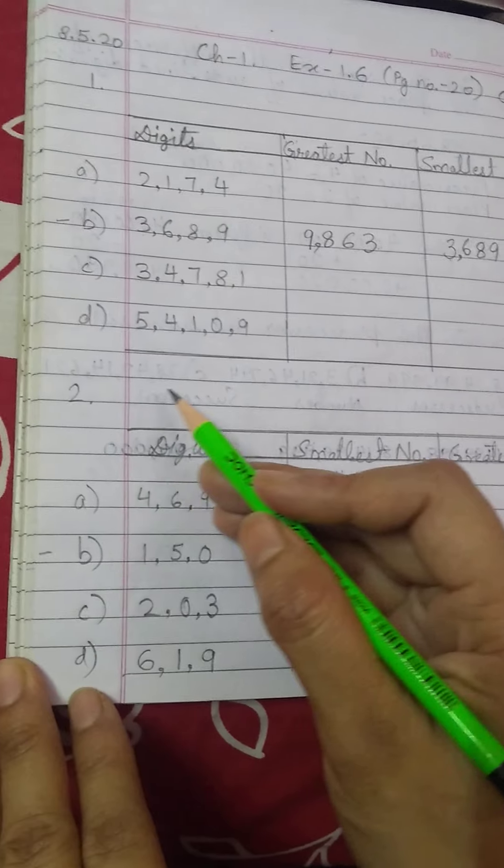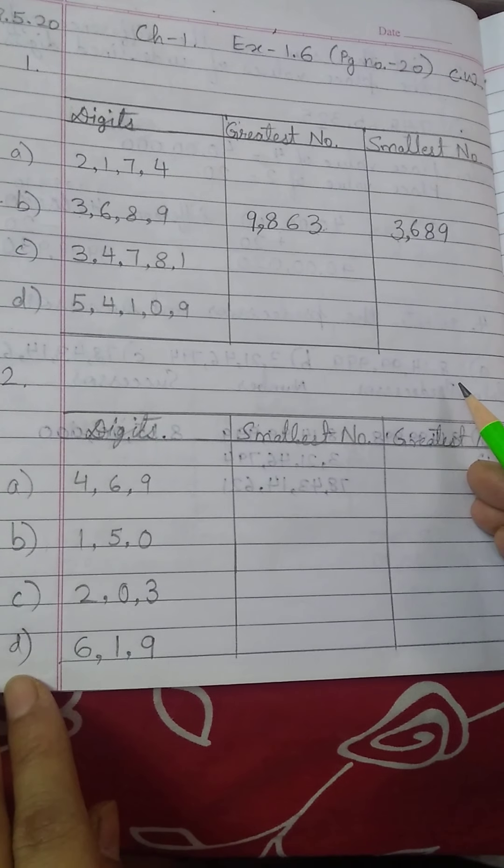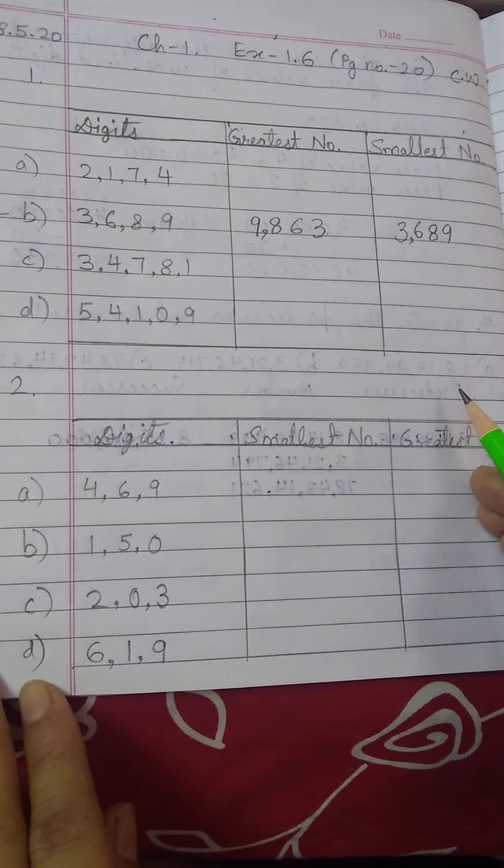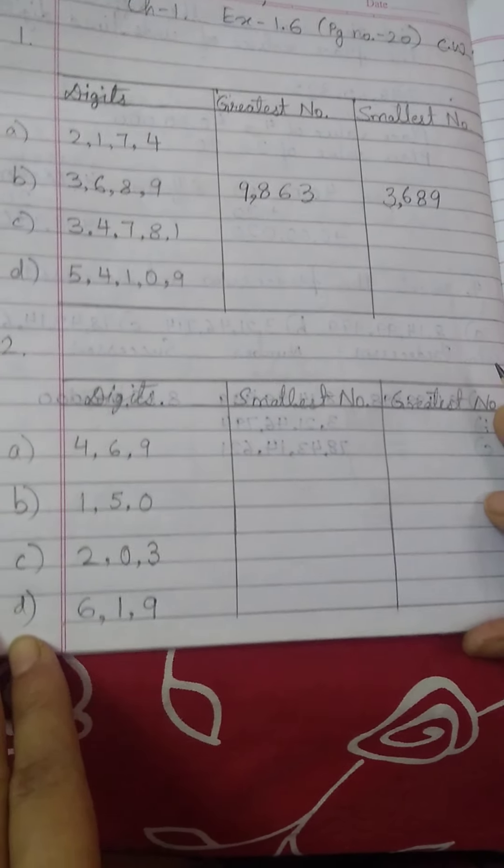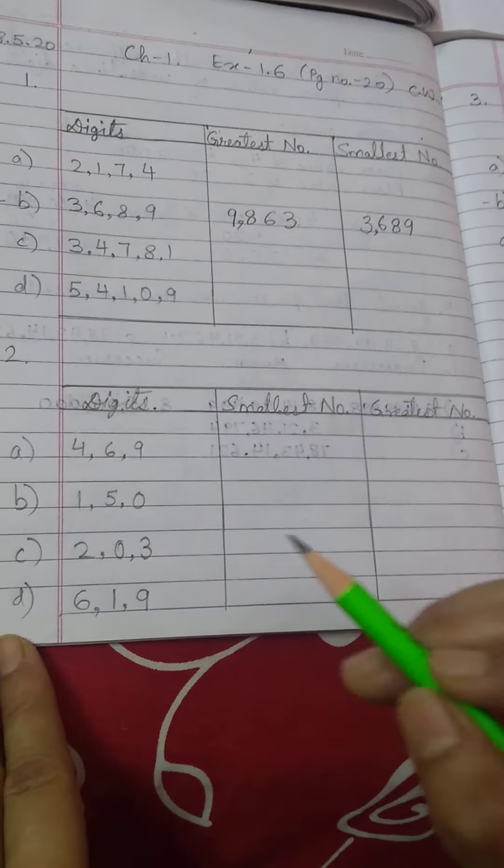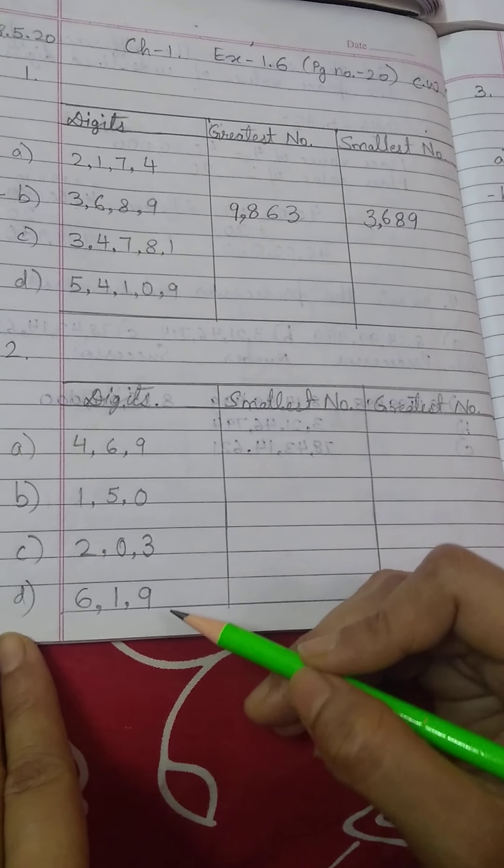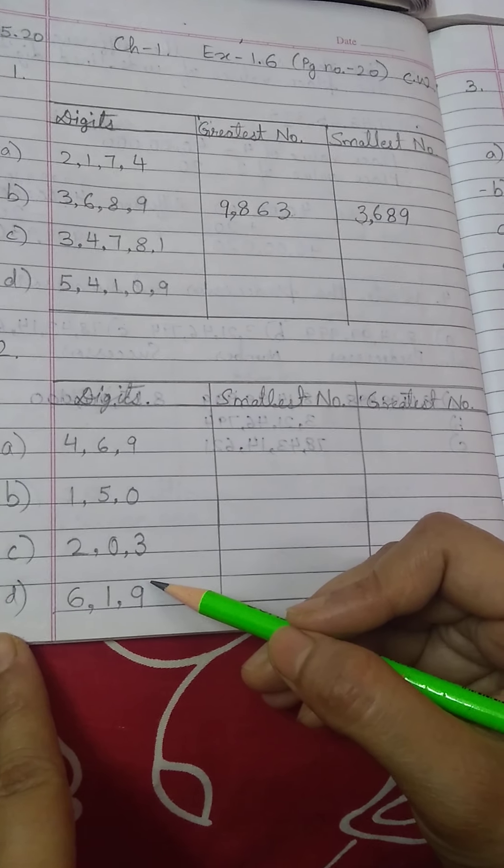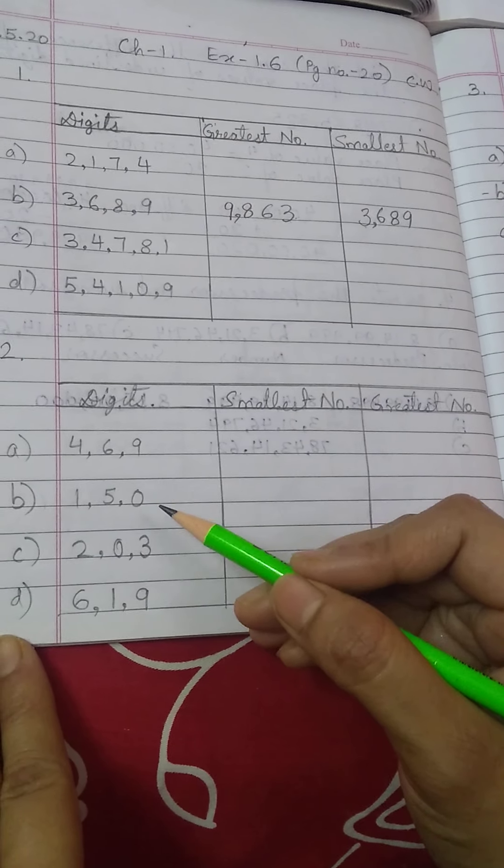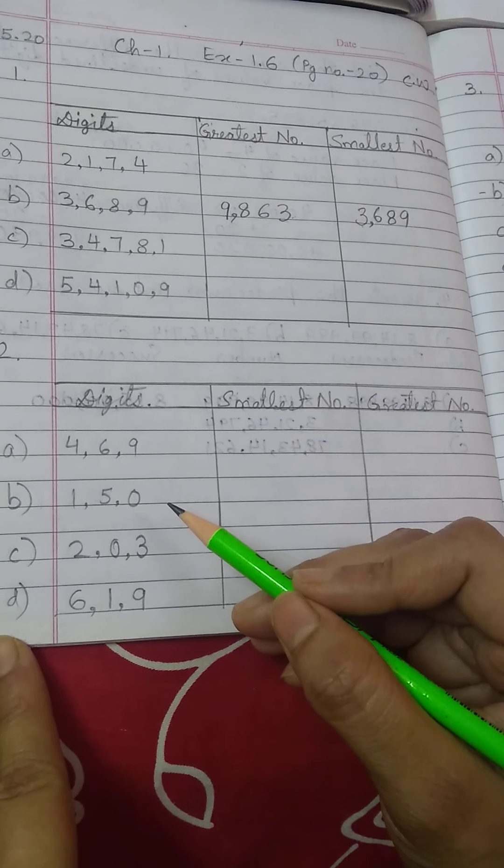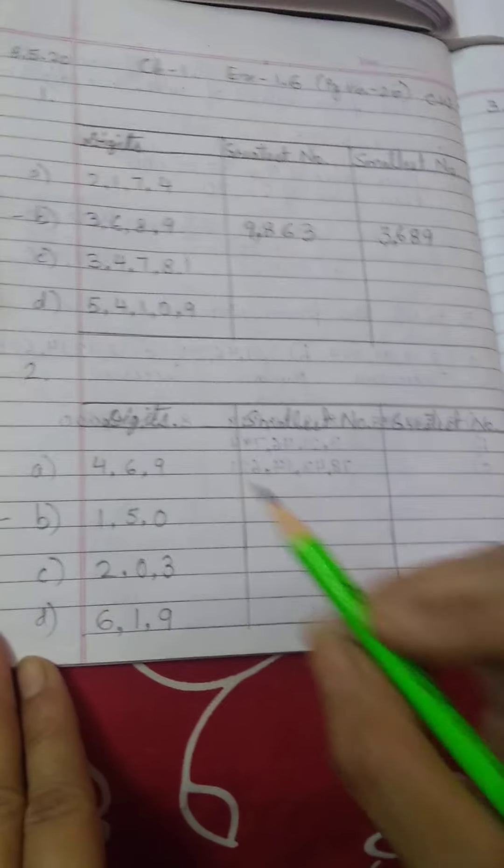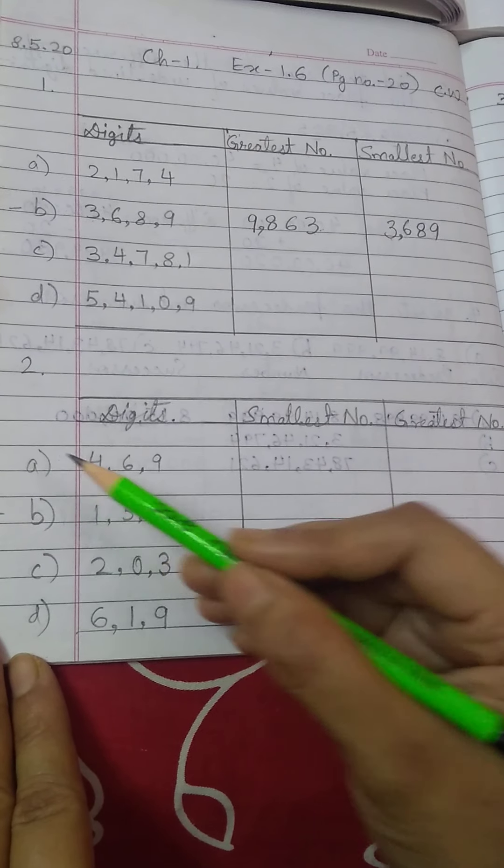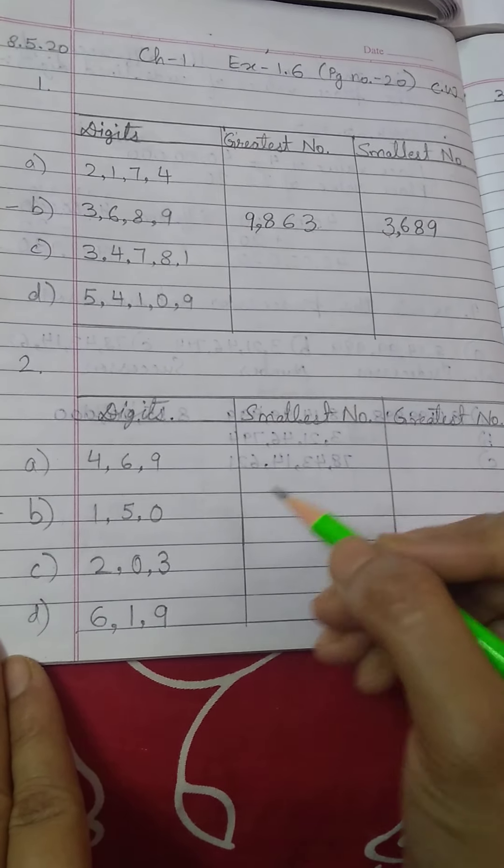Question number 2, you will begin this question writing the question from page number 20. That is, write the smallest and greatest 4 digit number using the given digit at least once. So, if you look at these digits, students. In every part, you will have 3 digits. But, if we make 4 digit number, which one will be repeated? Right? So, let me tell you, in your book, only these two parts are given. Right? C and D are added by me. So, let us do B part.